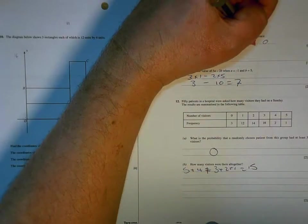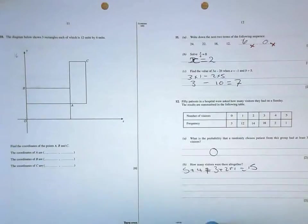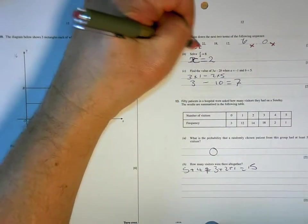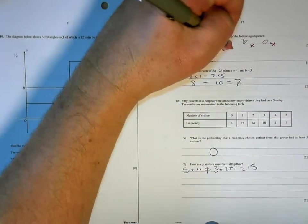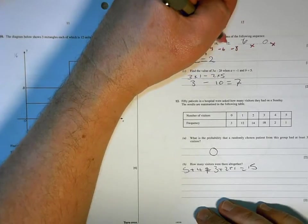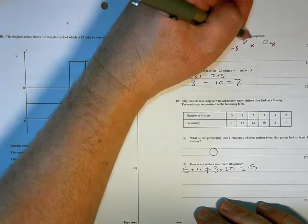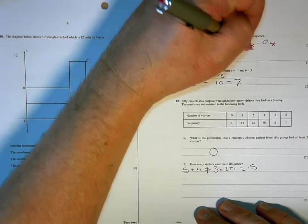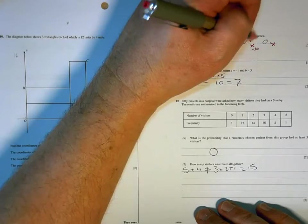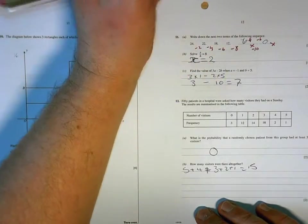6 and 0 are wrong. What's happening here is it's going down in 2, then in 4, then in 6. So it needs to go down 8. So, 12 take away 8 is 4. And then it needs to go down 10. 2, 4, 6, 8, 10. And 4 take away 10 is negative 6.